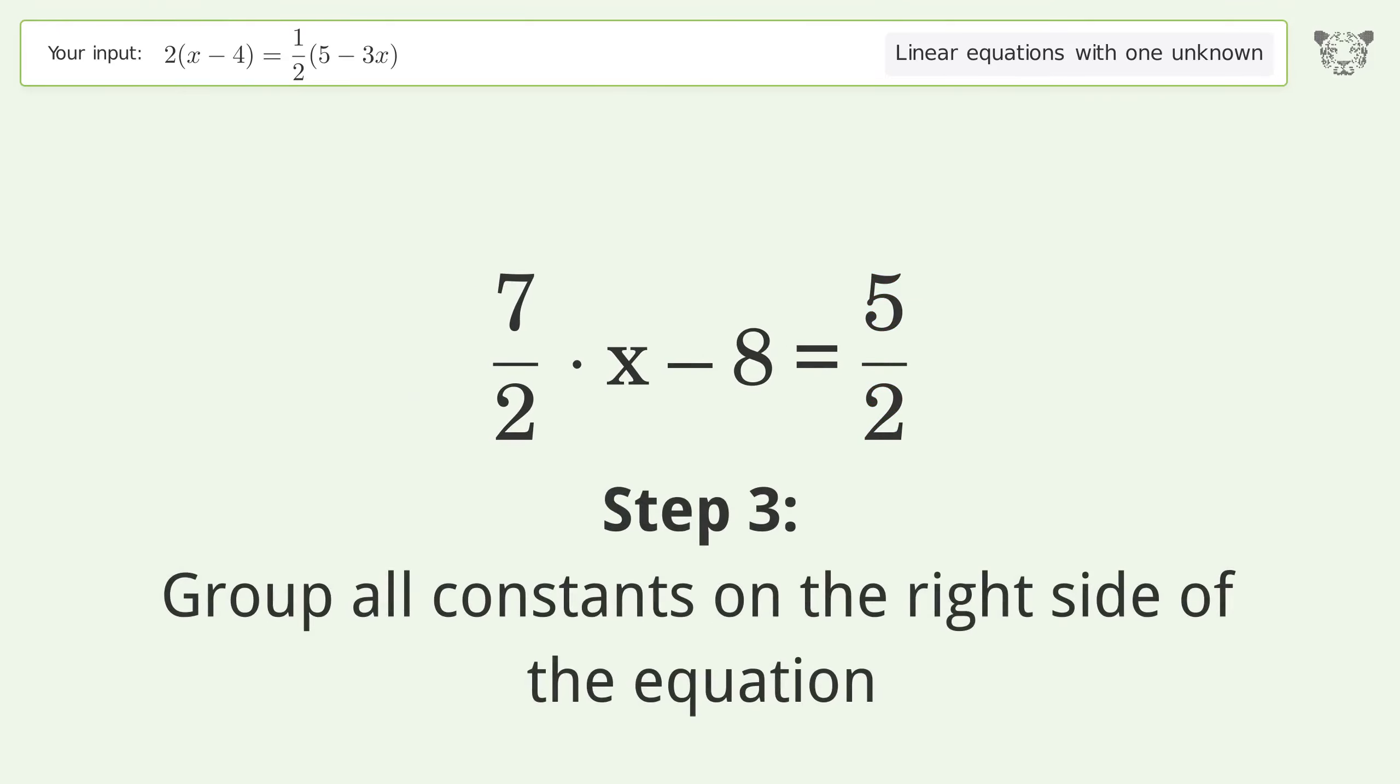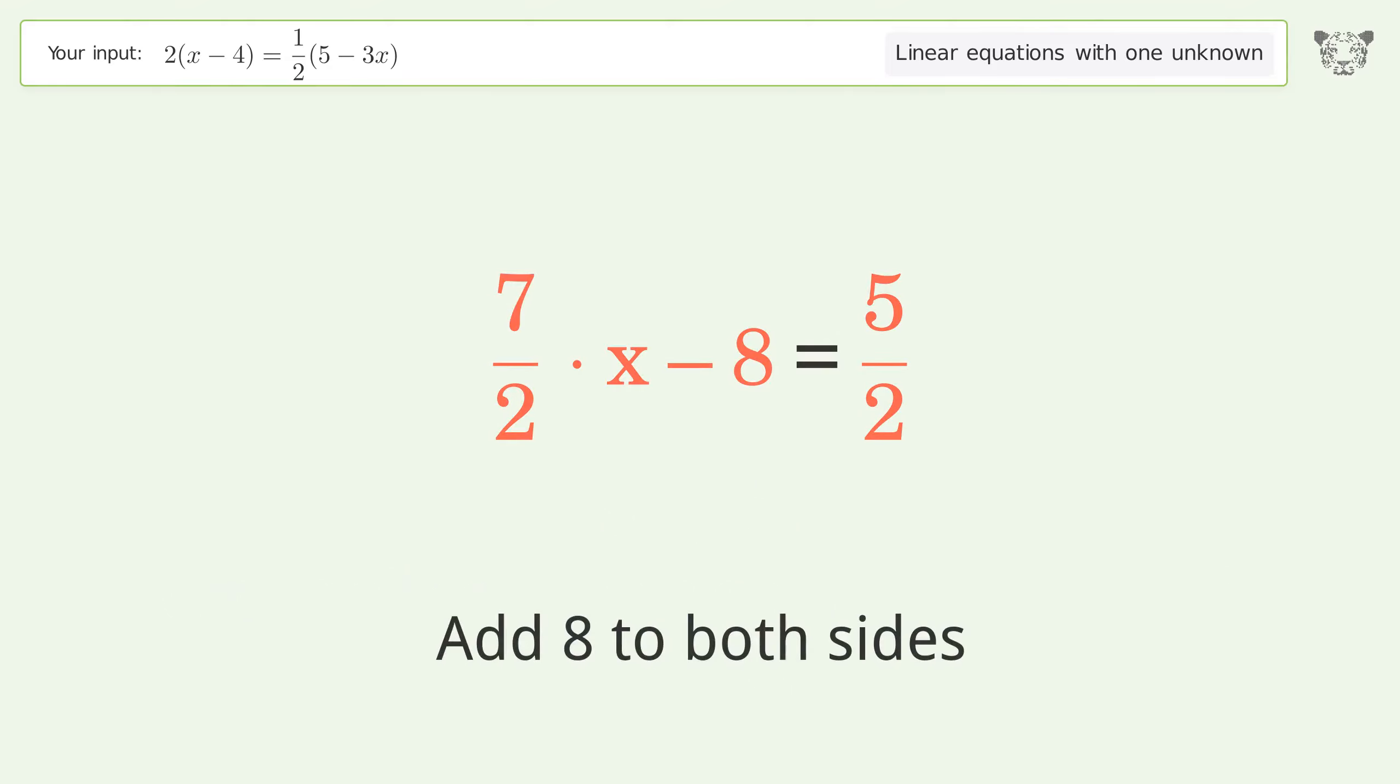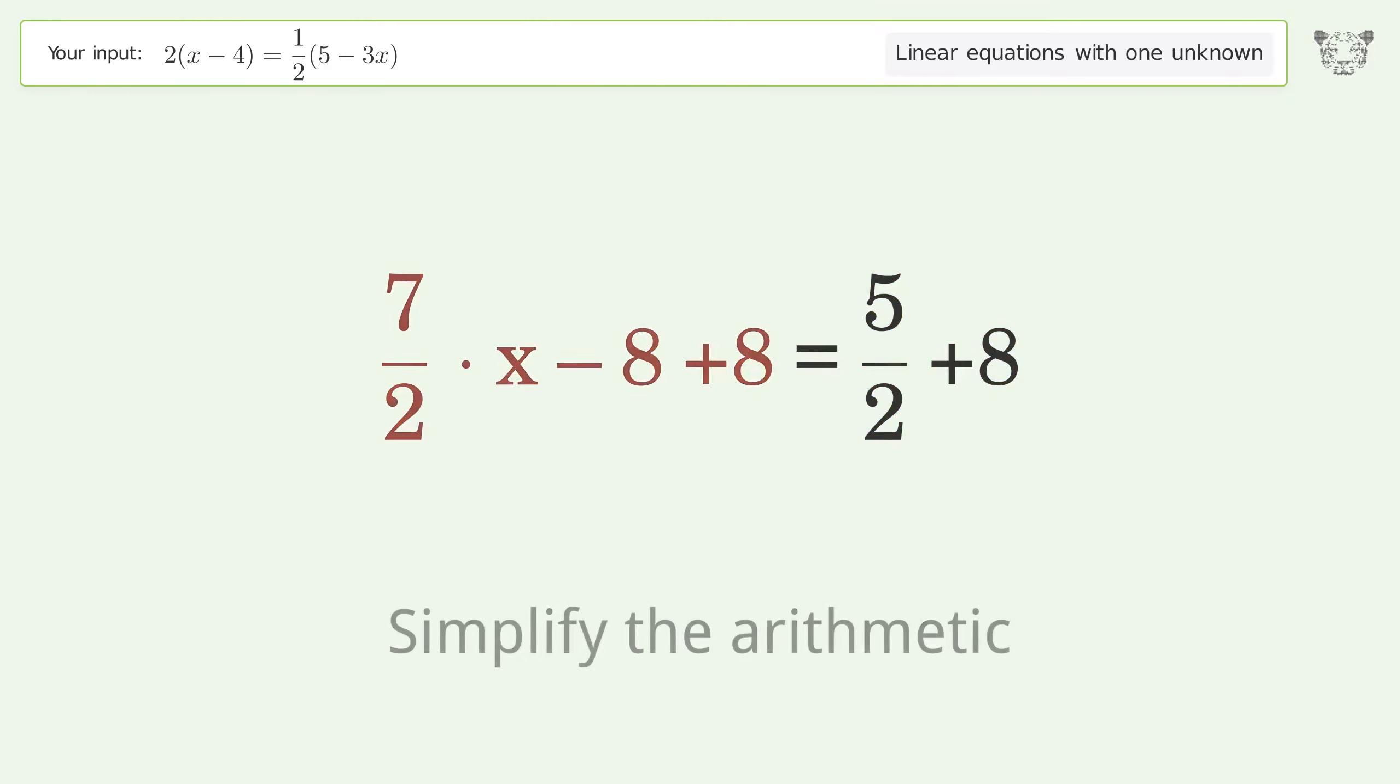Group all constants on the right side of the equation. Add 8 to both sides. Simplify the arithmetic.